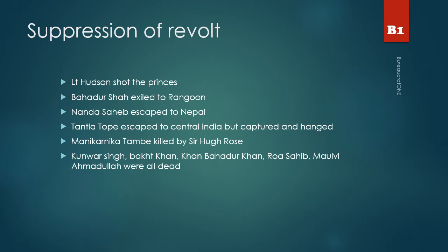The revolt could not be sustained for long. The British suppressed the revolt ruthlessly. For example, Lieutenant Hudson shot dead all the princes at point blank in Delhi. Bahadur Shah Zafar was exiled to Rangoon. Nana Sahib escaped to Nepal and was never heard from later. Tantya Tope also escaped to Central India but was captured and hanged later. Manikarnika Tambe was killed by Sir Hugh Rose. Kunwar Singh, Bakht Khan, Khan Bahadur Khan, Raha Sabi, and Maulvi Ahmadullah were all dead.